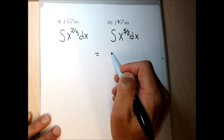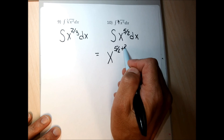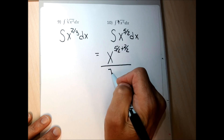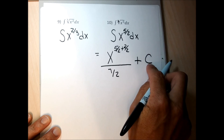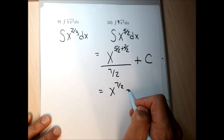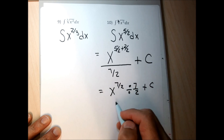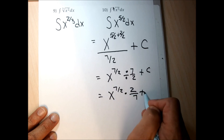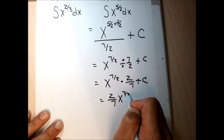Now I drop the integral symbol and add 1 to the exponent. Instead of adding 1, I write it as 2/2, so 5/2 plus 2/2 is 7/2. The new exponent is 7/2. I divide by 7/2 and tack on plus C. This gives x to the 7/2 divided by 7/2, which is the same as x to the 7/2 times 2/7, giving me 2/7 x to the 7/2 plus C.